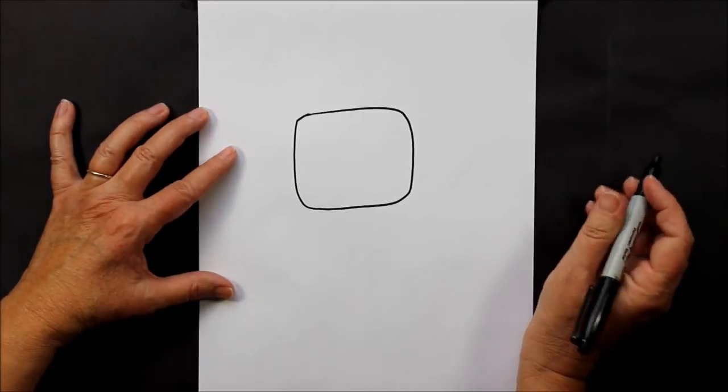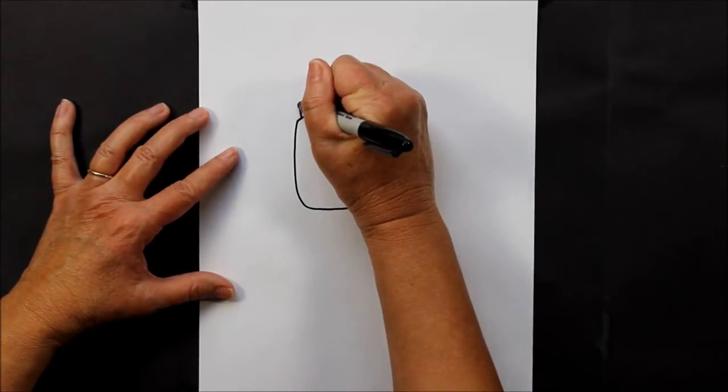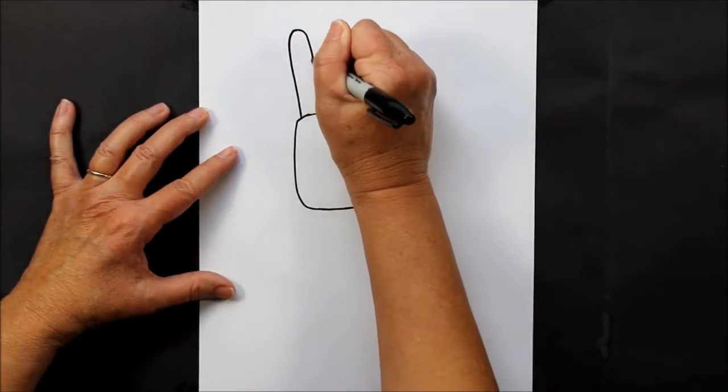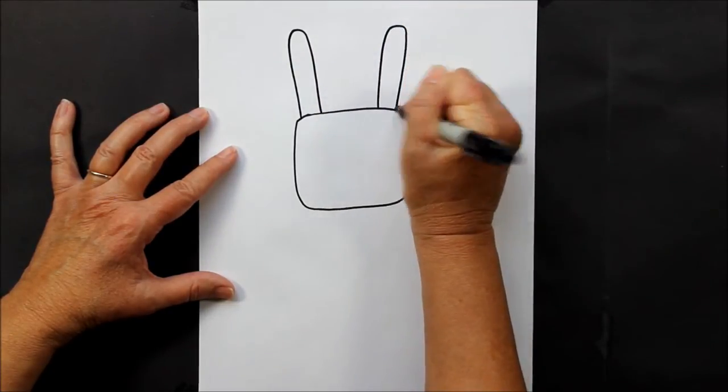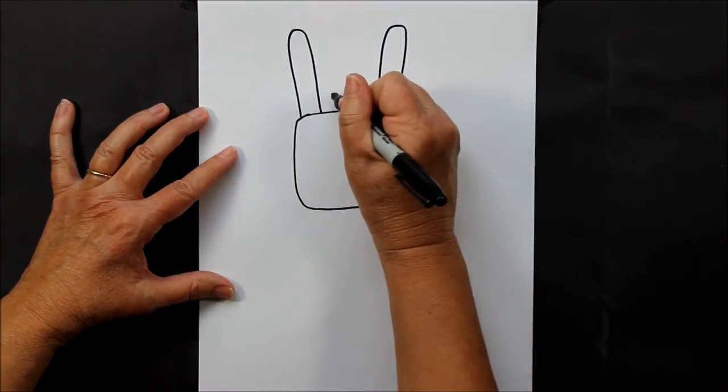And then for her ears we're going to make some long upside-down U's. And then for her bow we're going to make some soft rectangles on the top of her head connected by a circle.